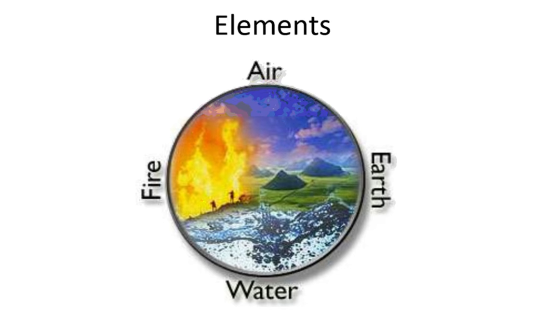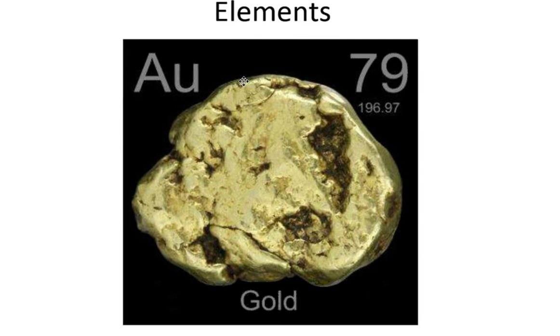Since then, we've learned that things are much more complicated. An element is a substance that is made up of one type of atom. Here's a piece of gold. Gold is only made up of gold, and so the element gold is only made of gold. The element oxygen is only made of oxygen. Those are one kind of atom.